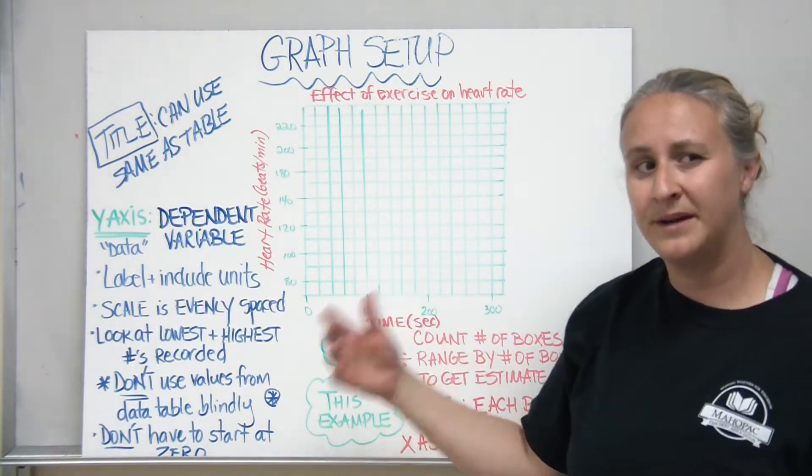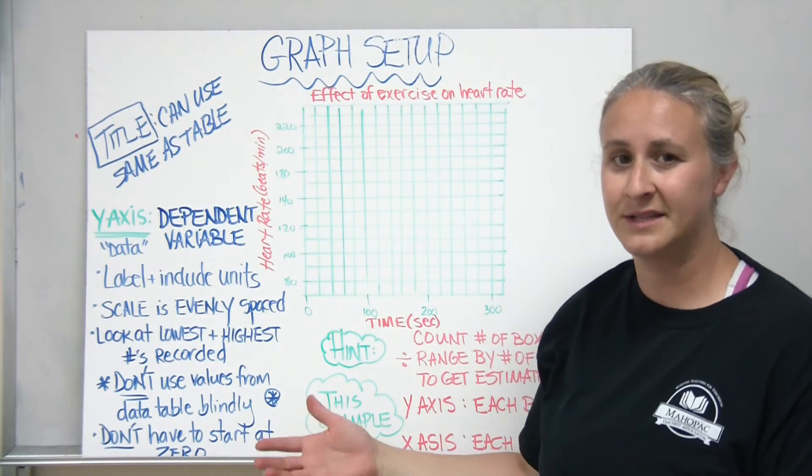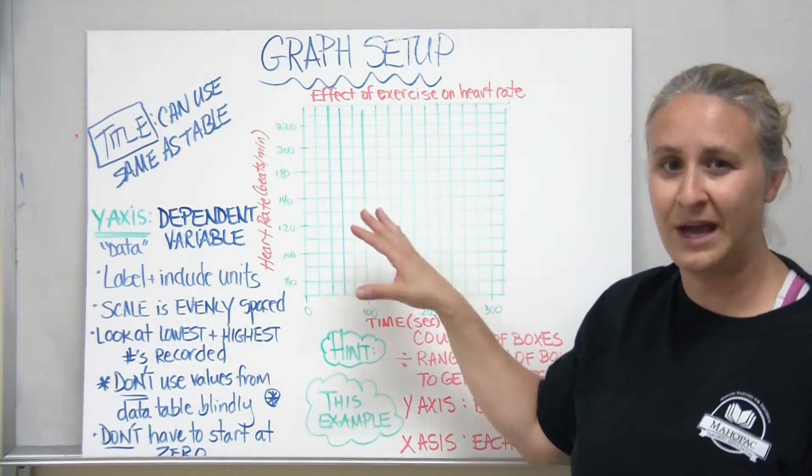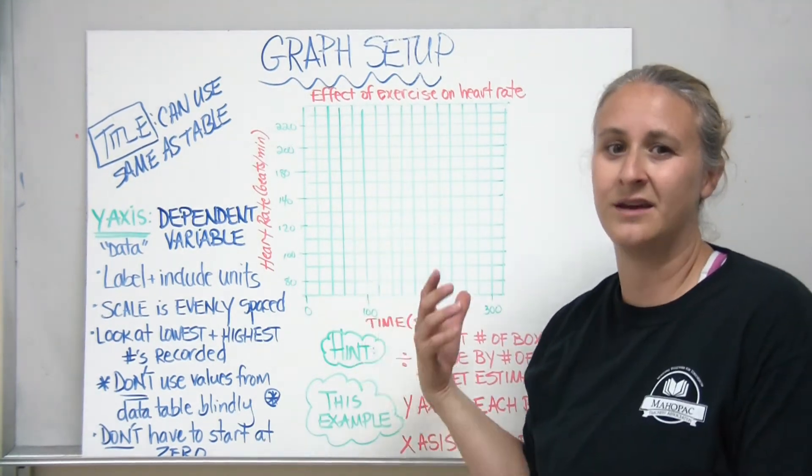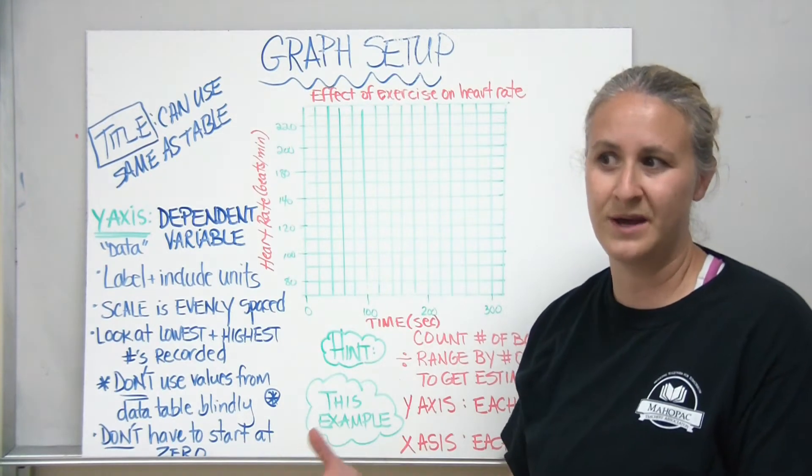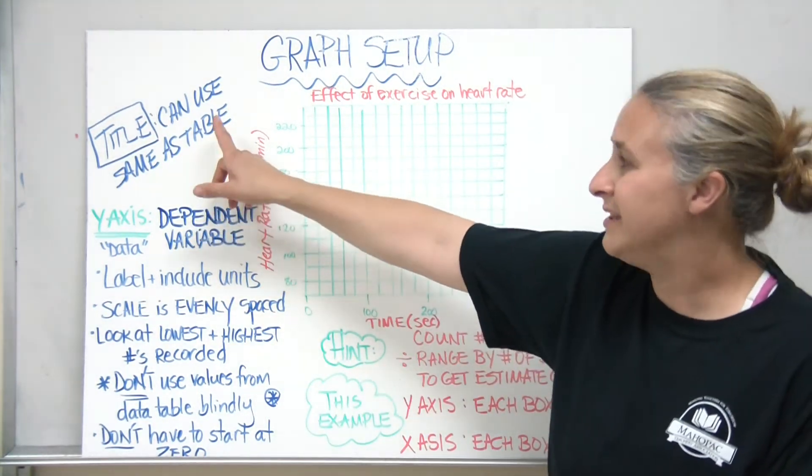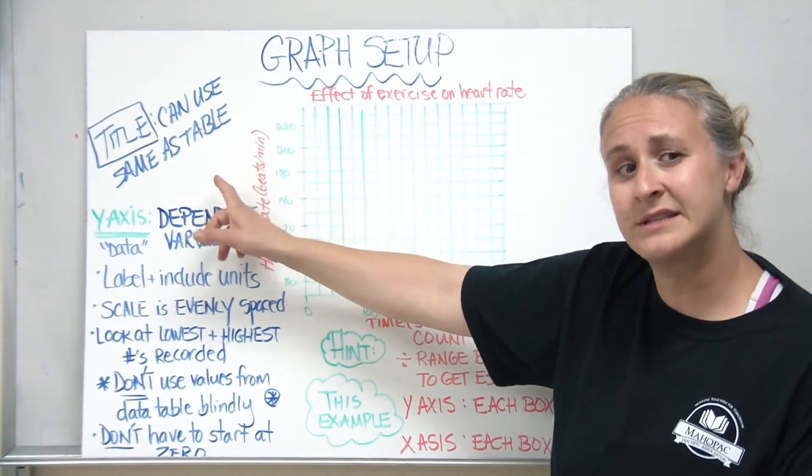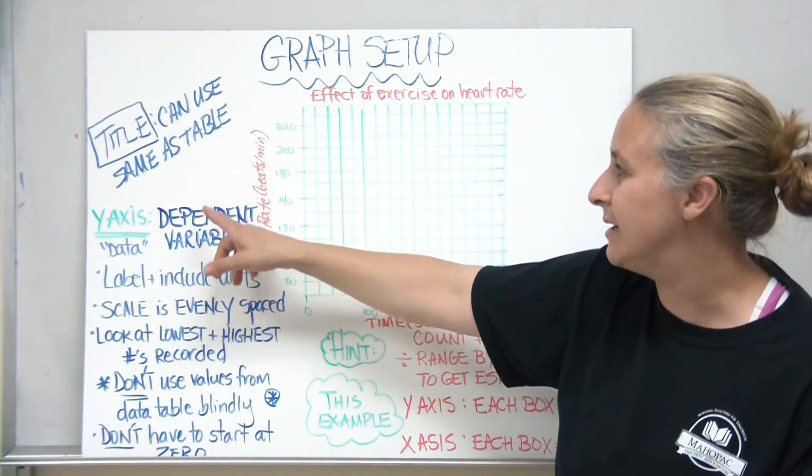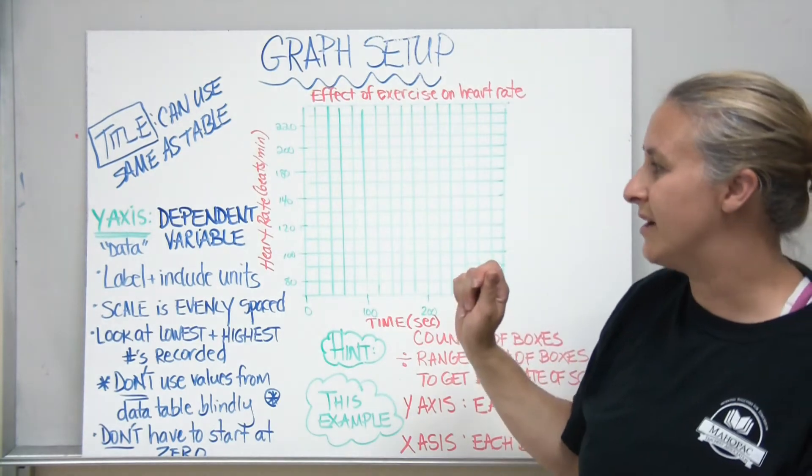Once I have my data set up, I've done my experiment and I've collected my data, we need to do a graph in order to organize the data and display it in a more meaningful way so that we can look for trends. When we set up our graph, this also needs a title and you can use the same title that you used from your data table, the effect of exercise on heart rate.